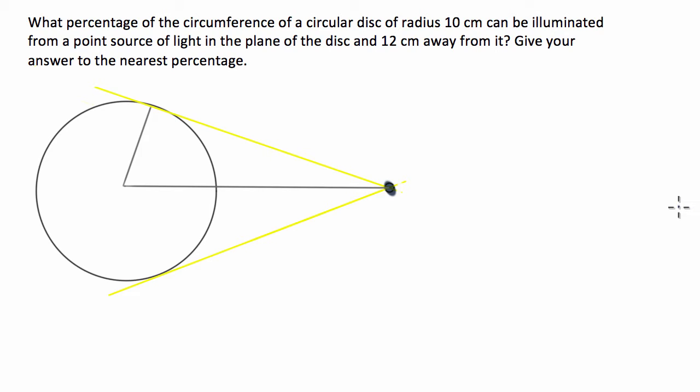Okay, so the first thing I'm going to do is put in all of my measurements. So what have we got? We've got 12cm away from it, so this length here is going to be 12cm. And we've also got a radius of 10cm, so let's throw that one in. So this is going to be 10cm here. And this length here from the centre of the circle to here is also going to be 10cm.